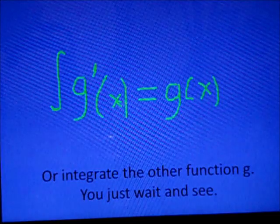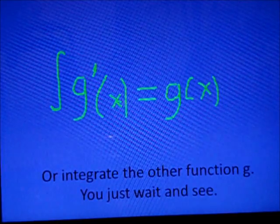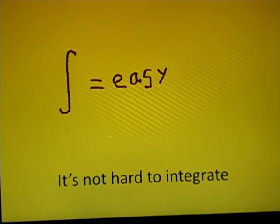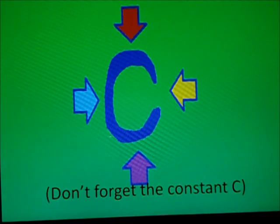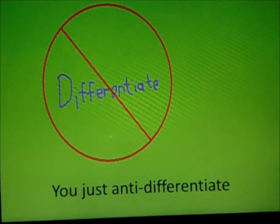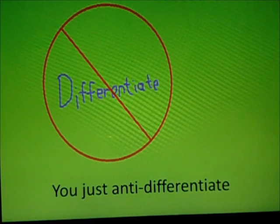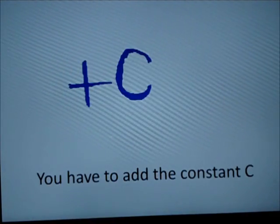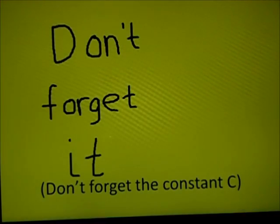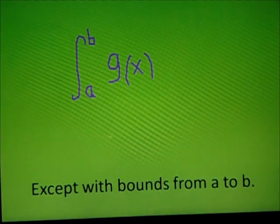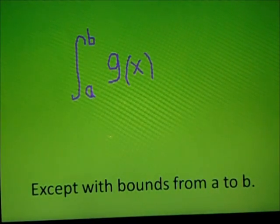You just wait and see. It's not hard to iterate. Don't forget the constant c, you just anti-differentiate. Don't forget the constant c, so you have to add the constant c. Don't forget the constant c, just accept the bounds from a to b.